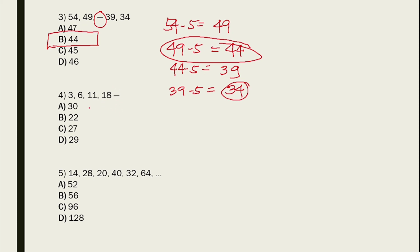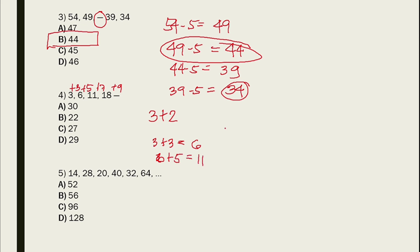Starting with 3, we add 3 to get 6, then add 5 to get 11, then add 7 to get 18. So the differences are 3, 5, 7 — increasing odd numbers, each time adding 2 more. So 3 plus 3 equals 6, 6 plus 5 equals 11, 11 plus 7 equals 18. The next term adds 9: 18 plus 9 equals 27. So the missing number is 27.